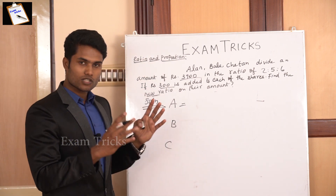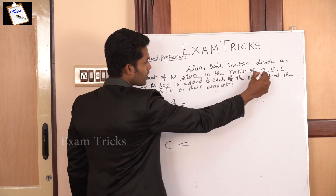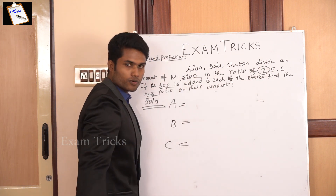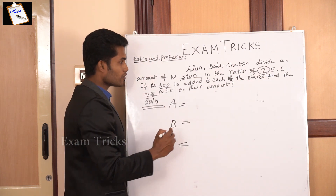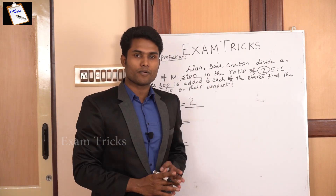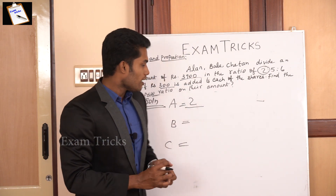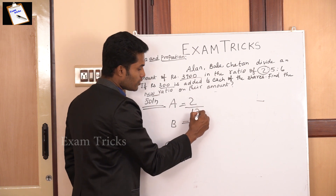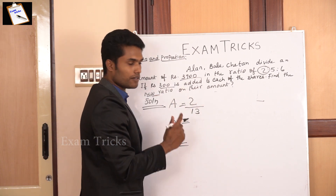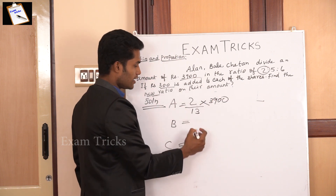This is how we solve it in the normal way — the conventional way of solving to find the answer. The ratio is 1 part to 2 parts for A, 1 part to 2 parts for B, and so on. Breaking into parts: 2 parts, 5 parts, 6 parts.